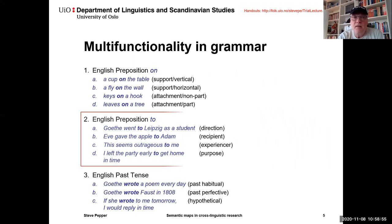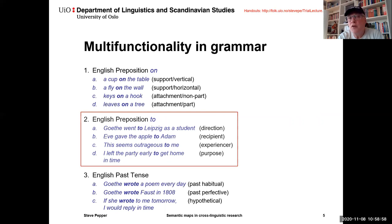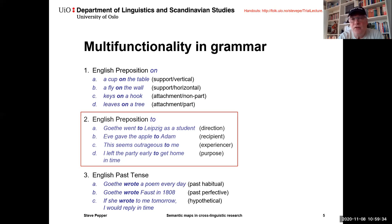Martin Haspelmath starts his seminal paper by talking about the issue of multifunctionality in grammar, giving three examples: the English preposition 'on,' the English preposition 'to,' and the English past tense. We'll use the second example quite a lot. Here we see four different functions of the preposition 'to': direction — 'Goethe went to Leipzig as a student'; recipient — 'Eve gave the apple to Adam'; experiencer — 'This seems outrageous to me'; and purpose — 'I left the party early to get home in time.'